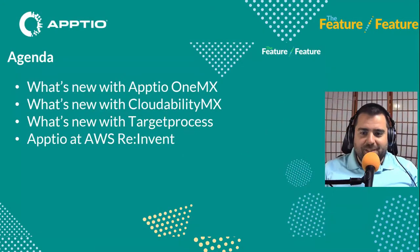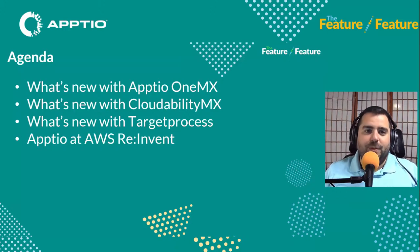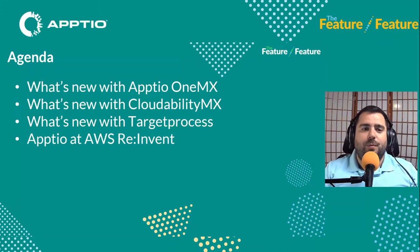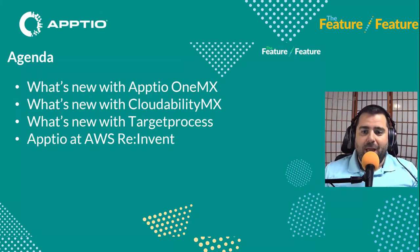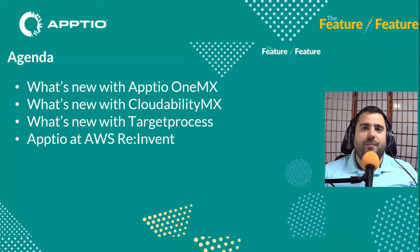Alright everybody, thanks for joining us today. My name is Hunter Willis and we've got the Feature Feature here with you today. We're going to be going over the updates from October — today's November 10th. First we're going to be talking about the updates with Aptio One, then as always we go over the updates with Cloudability, then the updates that happened in October with Target Process, and then we're going to be talking a little bit about Aptio at re:Invent. We're excited to be there this year — we're platinum sponsors, so it's going to be a great event.